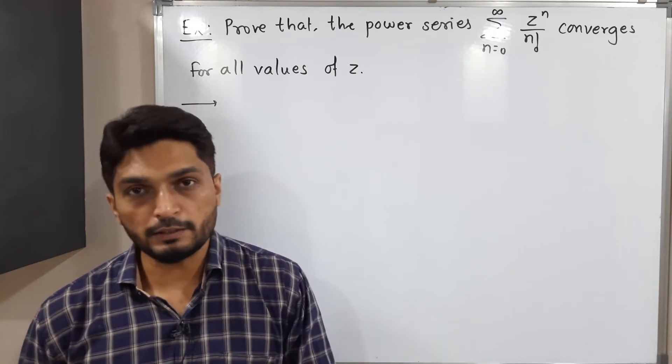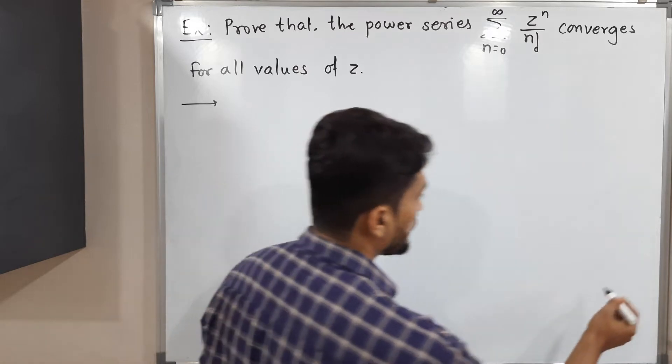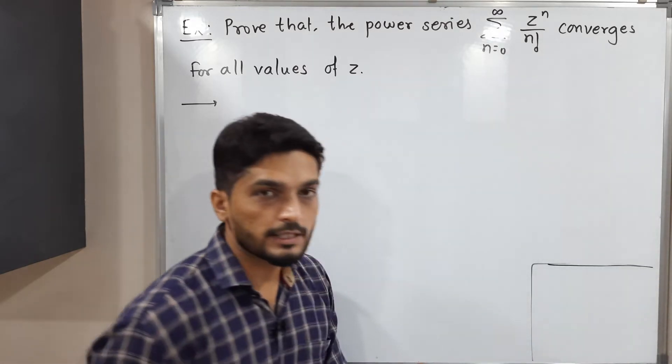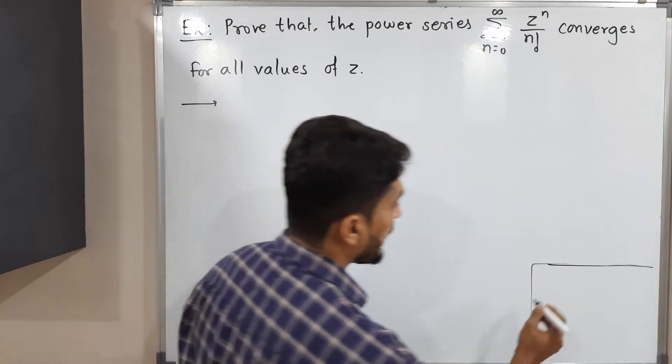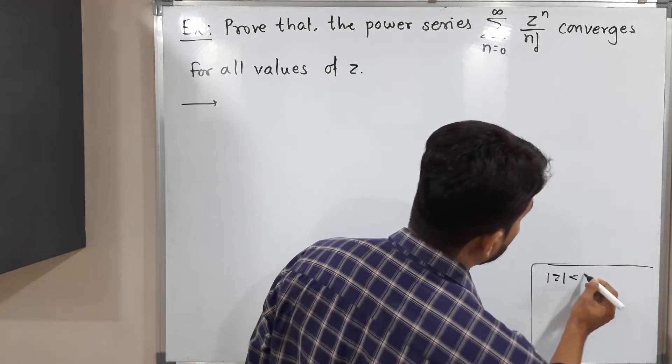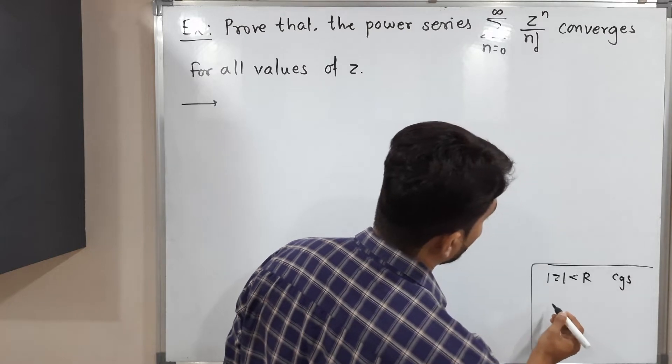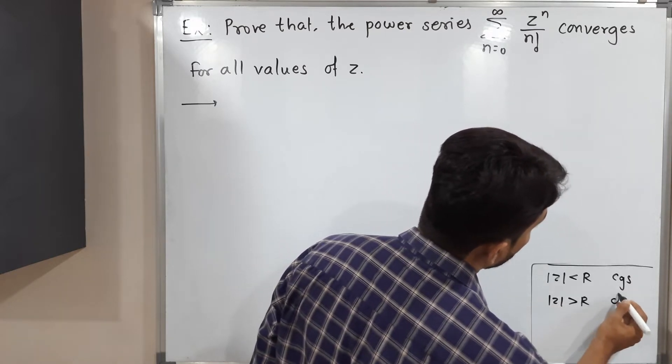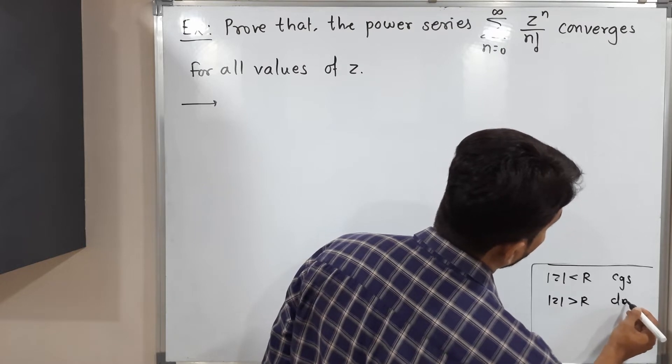So let us recall this concept. So for each power series there is some radius of convergence, and if you have mod z less than r then we say the series converges, and if mod z greater than r then the series diverges.